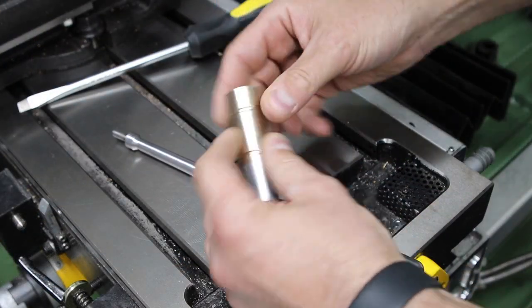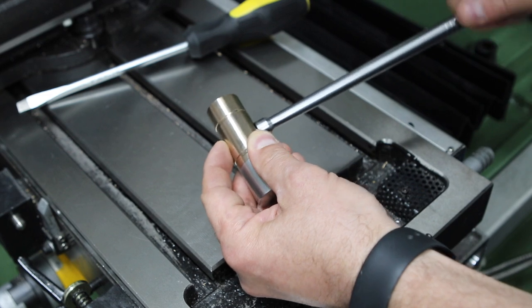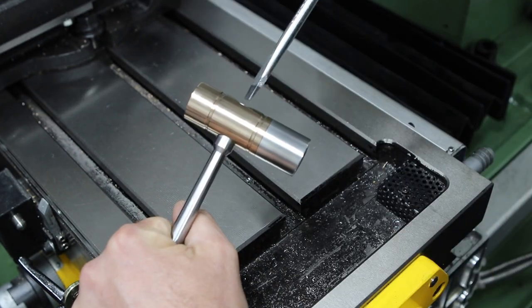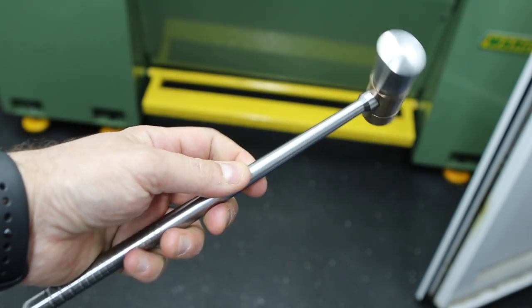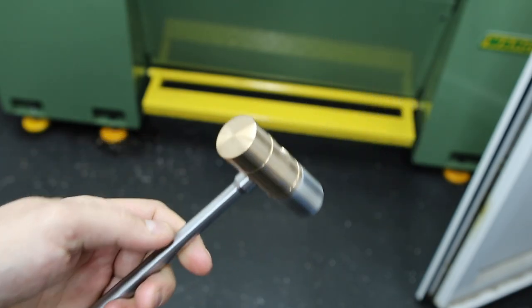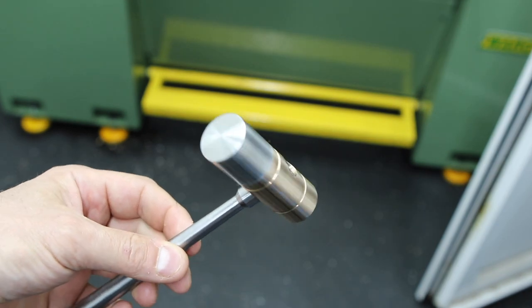The plans called for two flats to be filed in the head of the shaft there so that you can get a spanner on it and torque it up, but I prefer the look of it without the flats and I found that actually I was able to tighten it just fine.